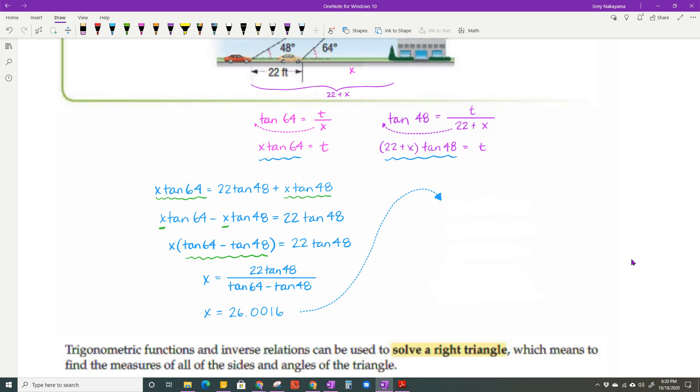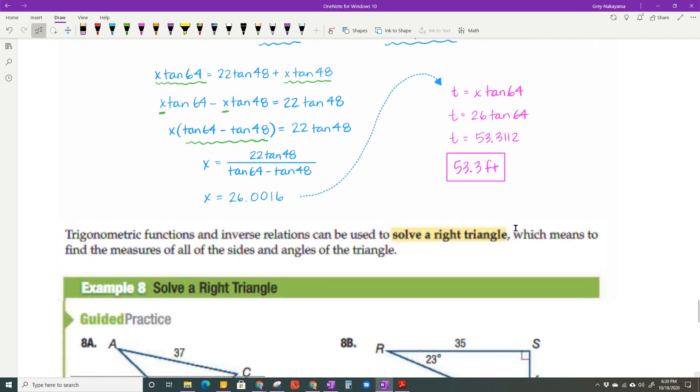I've got to find T, because that's X. I'm looking for T, which is the answer to the problem. I can plug X into either equation, and this one looks simpler. So T equals X times the tangent of 64, and X is 26. When I plug that in my calculator, I get 53.3112, which rounds to 53.3 feet.